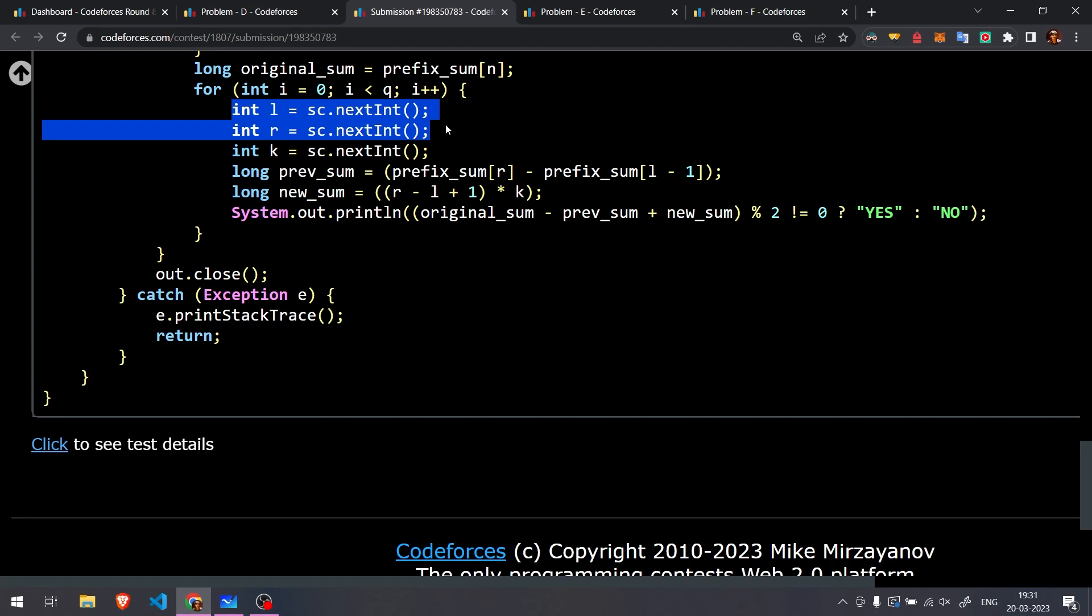And then we have taken the range, the number K, and previous sum is basically the part to be subtracted and new sum is the part to be added. And then original sum minus previous sum plus new sum, if it is divisible by 2 then it's yes otherwise no.